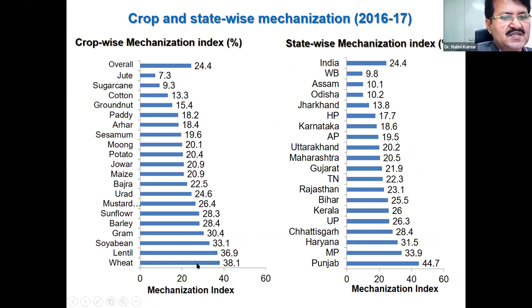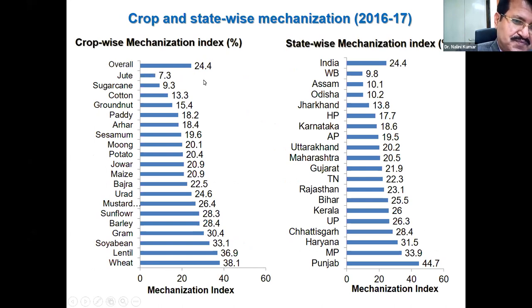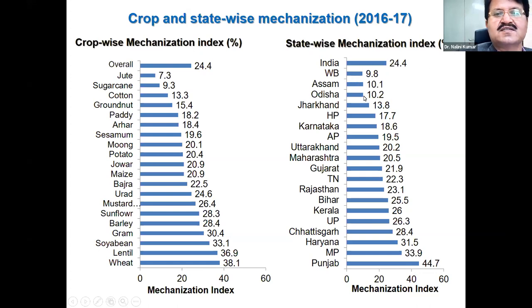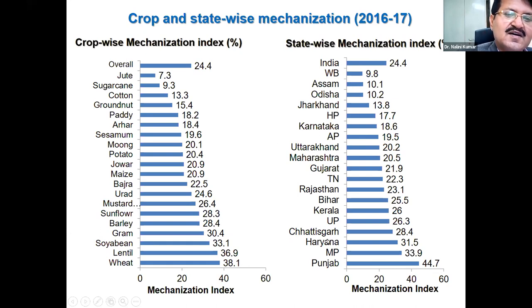It was found that wheat is the most mechanized crop, followed by cotton, soybean, gram, and paddy, whereas jute is the least mechanized crop. Looking at states, Punjab is the most mechanized state. Some areas require more attention to improving mechanization — not only those areas but the entire country, particularly for marginal and small farmers because they are lagging in mechanization.